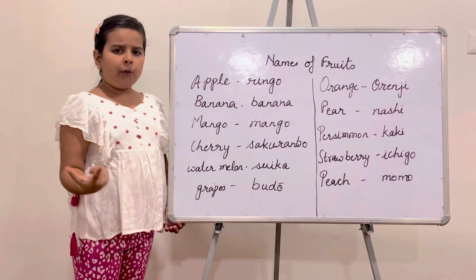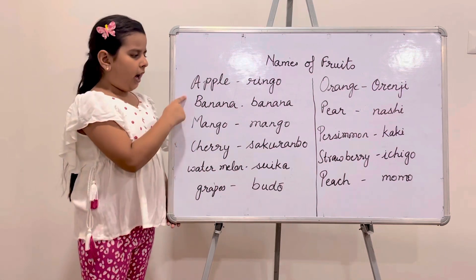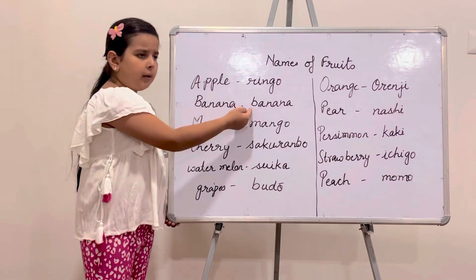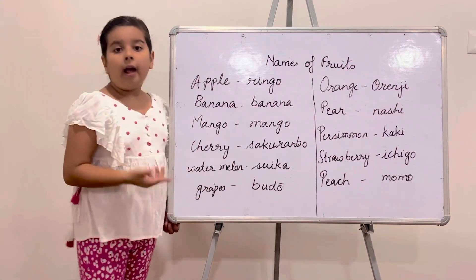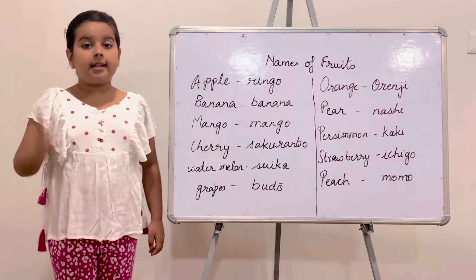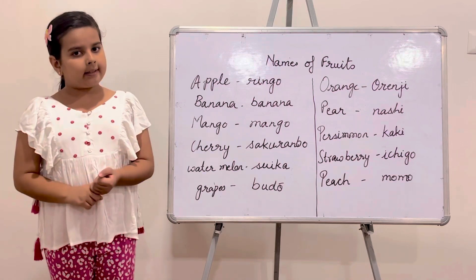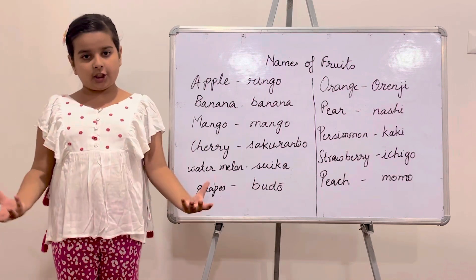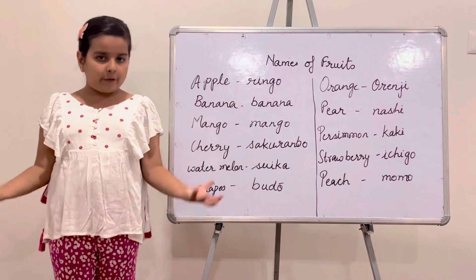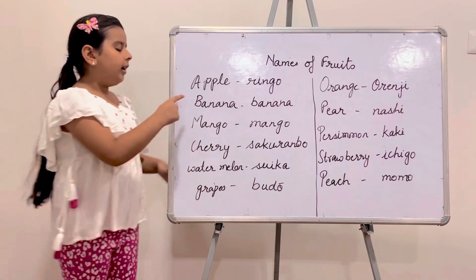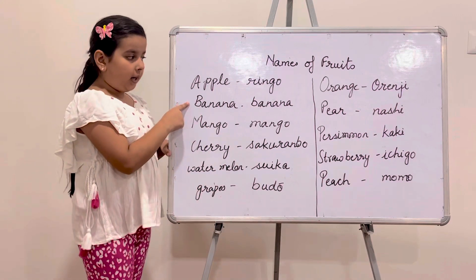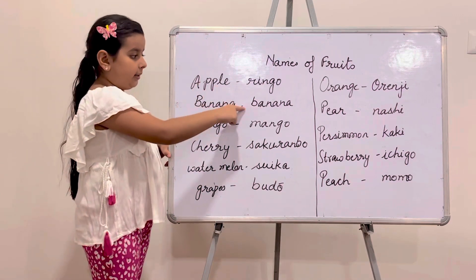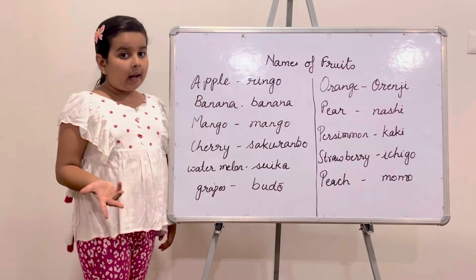The next fruit is Banana. You would think Banana is known as Banana only, but that is incorrect. The spelling is the same but the pronunciation is different. This is 'Banana' and this is 'Banana'.